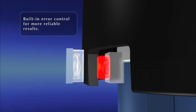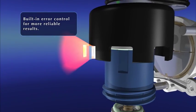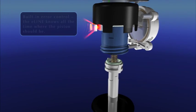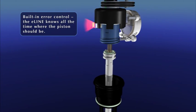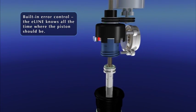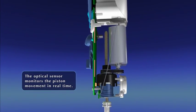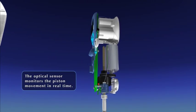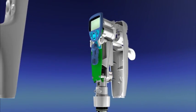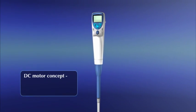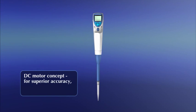Even the best pipetter may occasionally make errors. However, the E-Line features a built-in error control. The optical sensor controls and monitors the piston movement in real time. That means, if an error occurs while pipetting, the pipetter notifies the user about it and results become more reliable. Therefore, the DC motor concept means superior accuracy, precision, safety, and reliability.